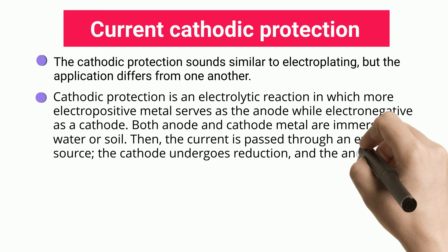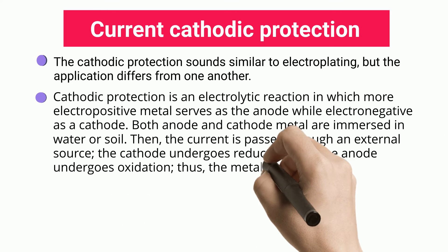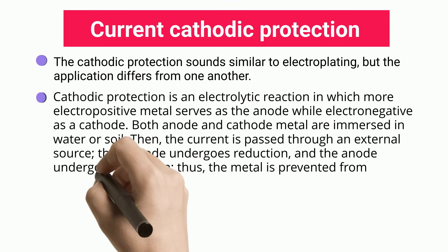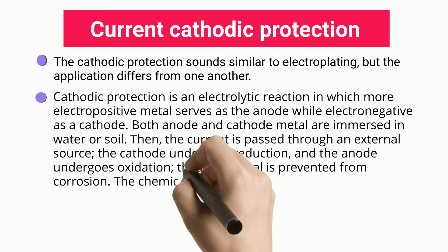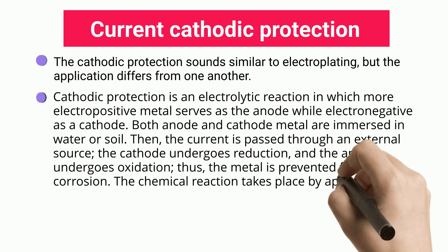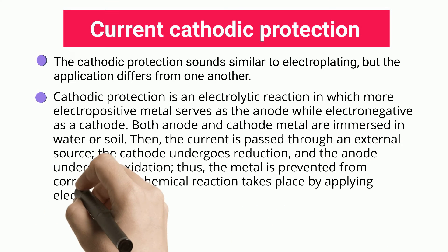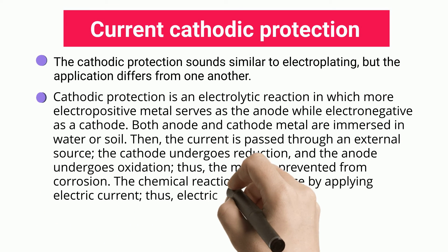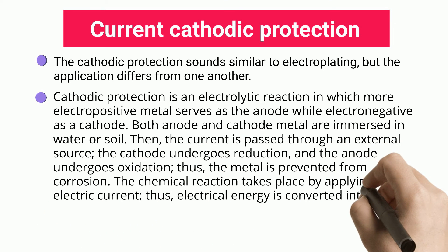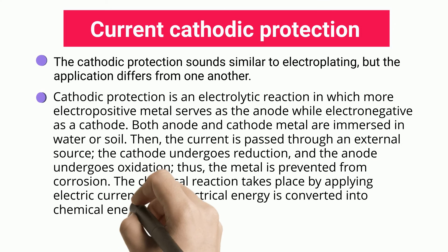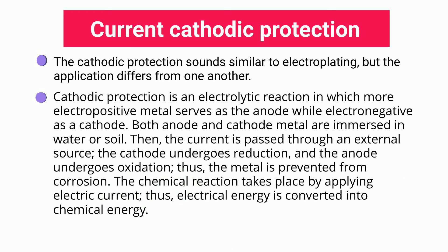Then, the current is passed through an external source; the cathode undergoes reduction and the anode undergoes oxidation, thus the metal is prevented from corrosion. The chemical reaction takes place by applying electric current, thus electrical energy is converted into chemical energy.